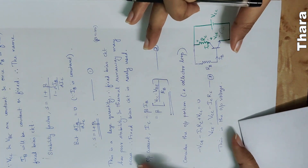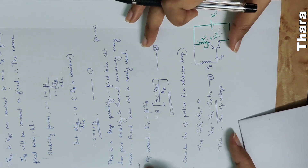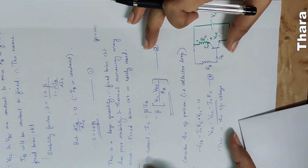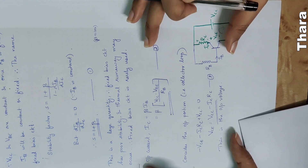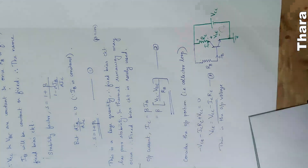The output voltage equation is VCE equal to VCC minus ICRC. This is the KTU/university exam derivation: find the output current and output voltage of the fixed bias circuit.